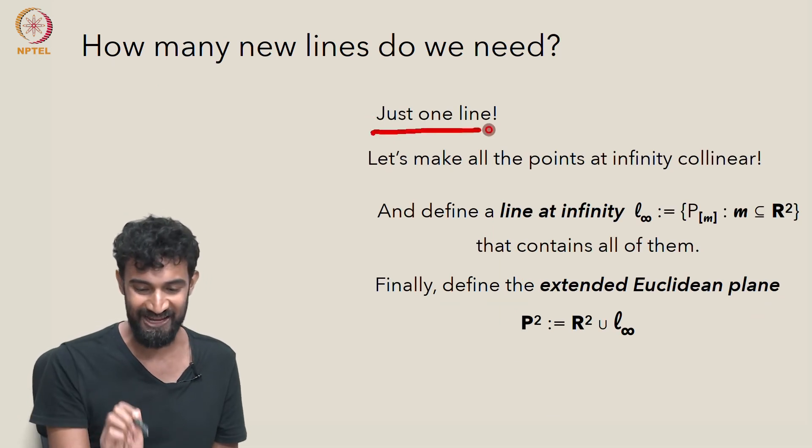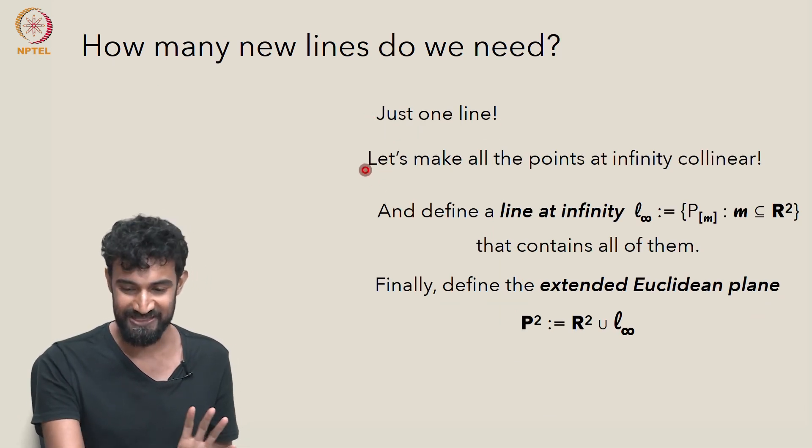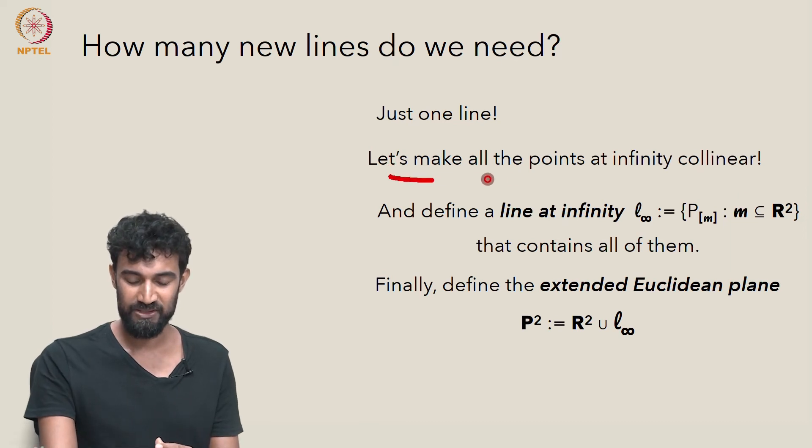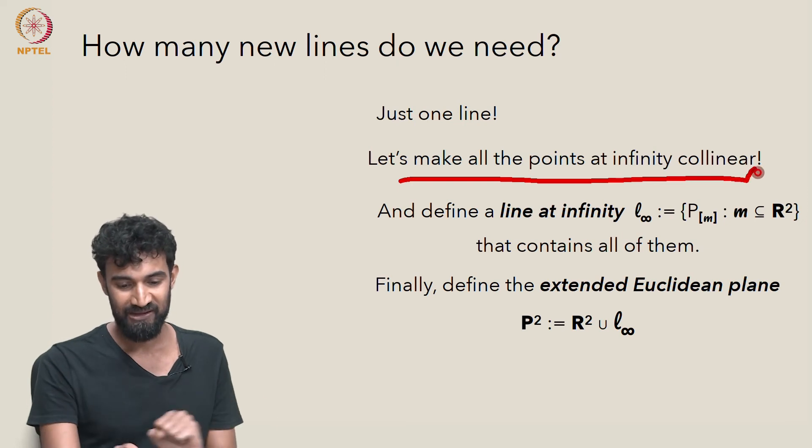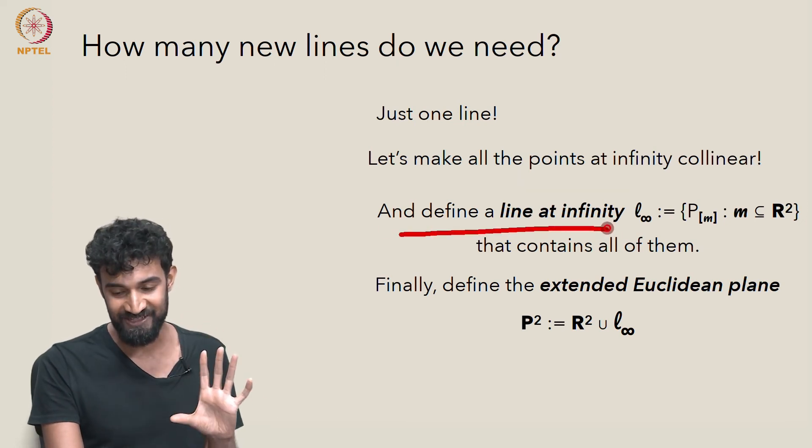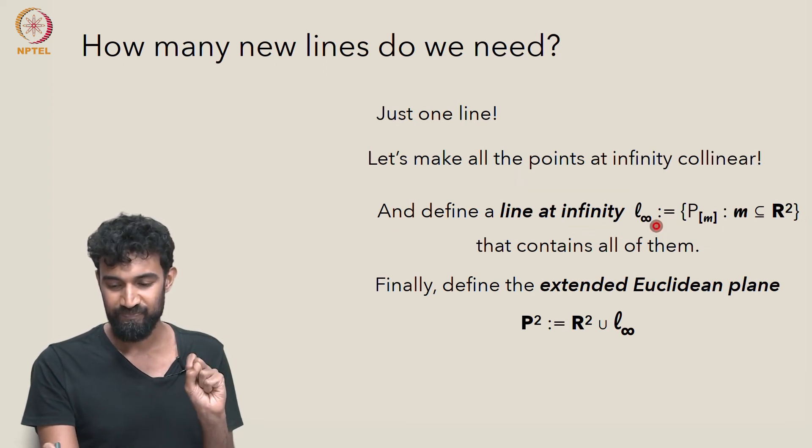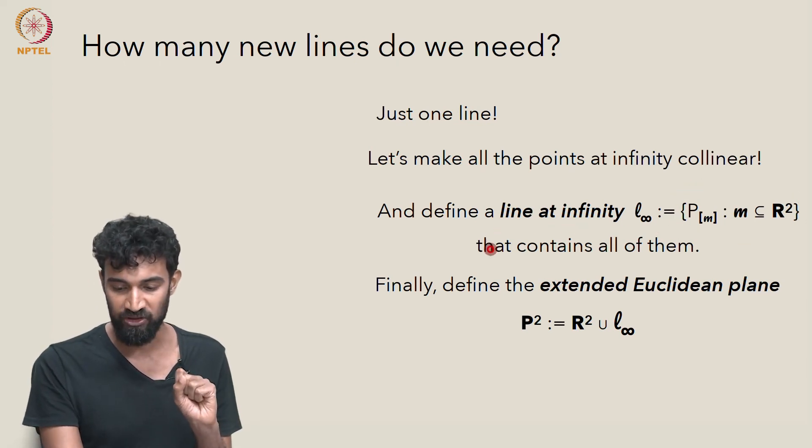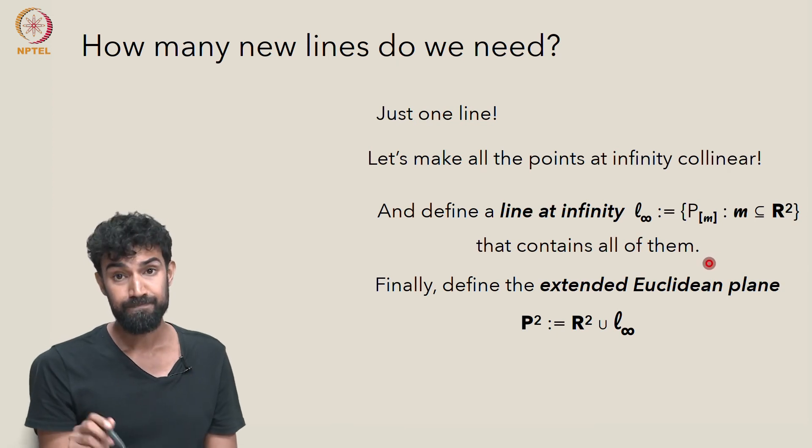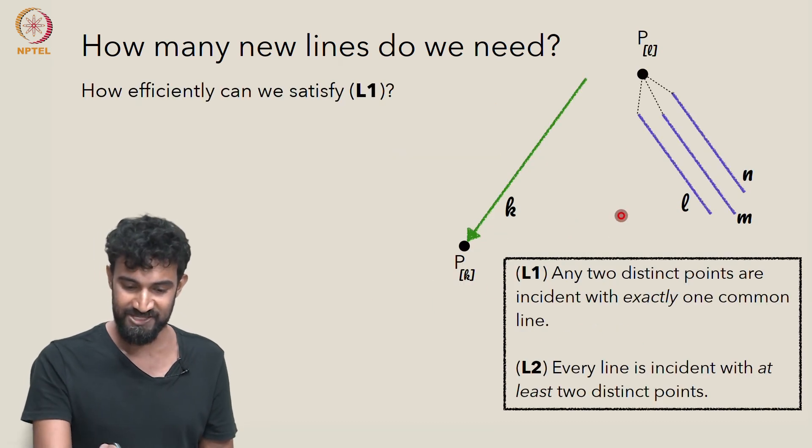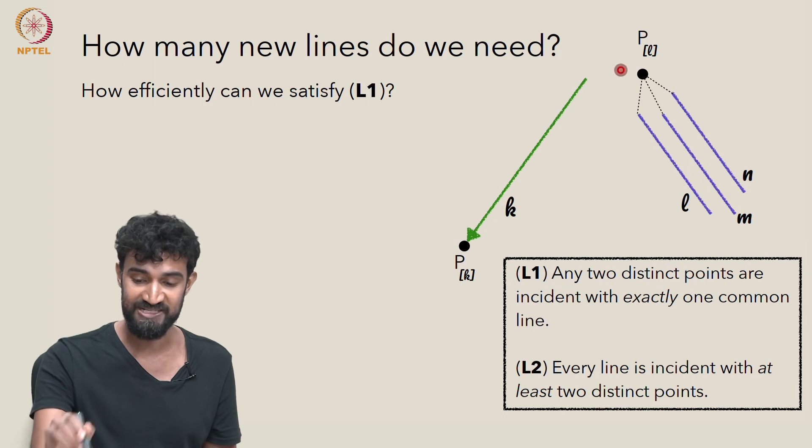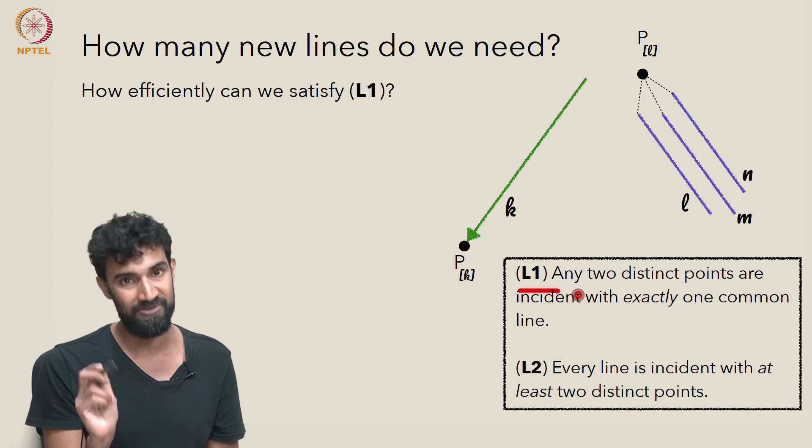Well, it turns out we just need one line. And let's just do this in the simplest possible way we can think of. Let's make all the points at infinity collinear. Let's define a line at infinity, L infinity, which is just a collection of all the different points at infinity. It's going to contain all the points at infinity. And let's now define this extended Euclidean plane. So this line at infinity, it's going to be the unique line that contains both of these guys. It's going to connect them. And L1 will be satisfied.